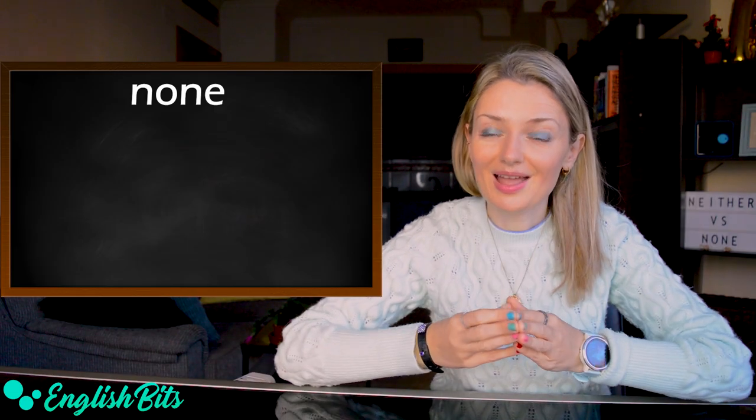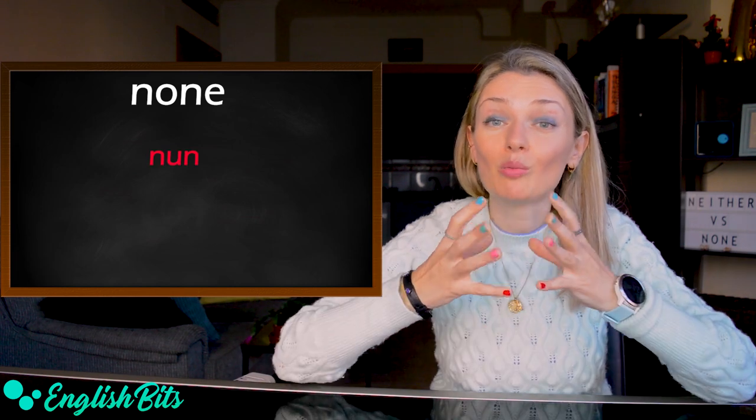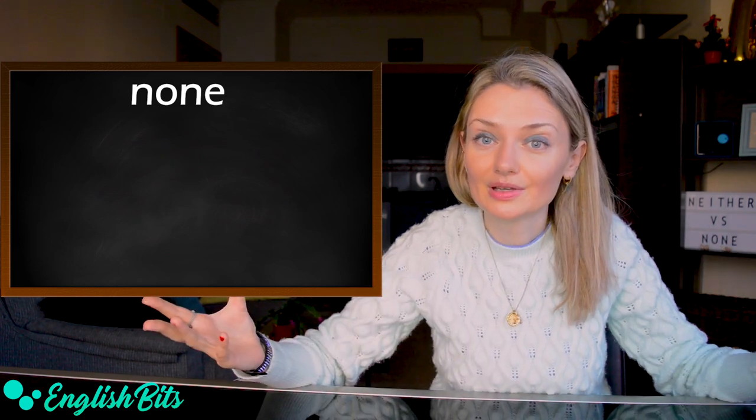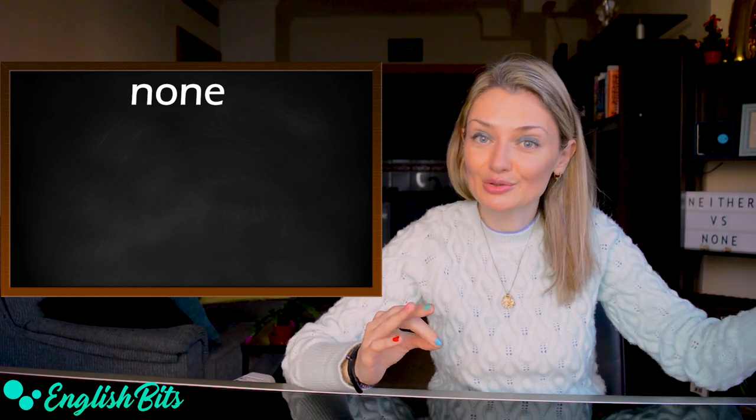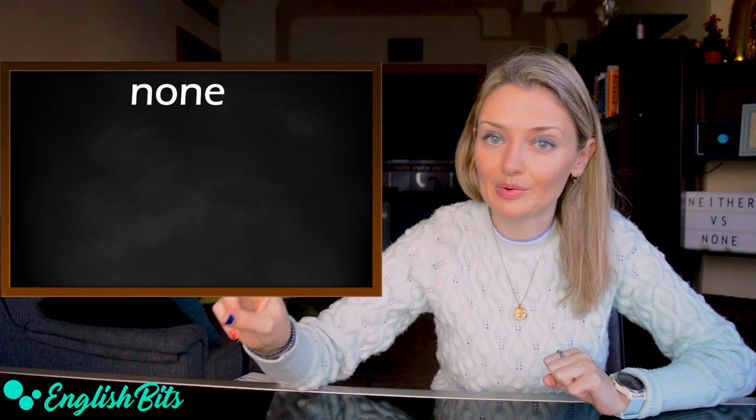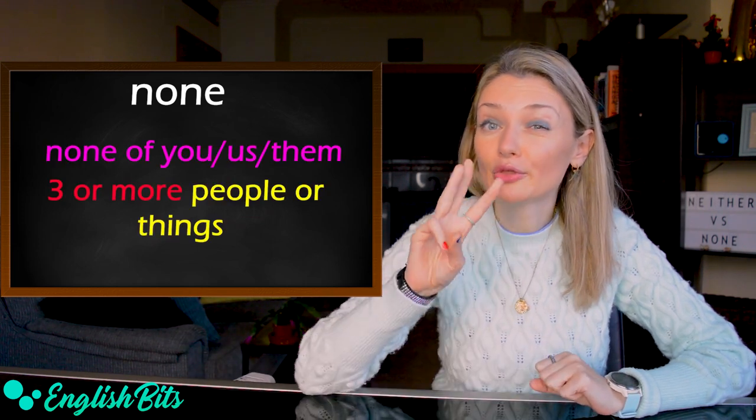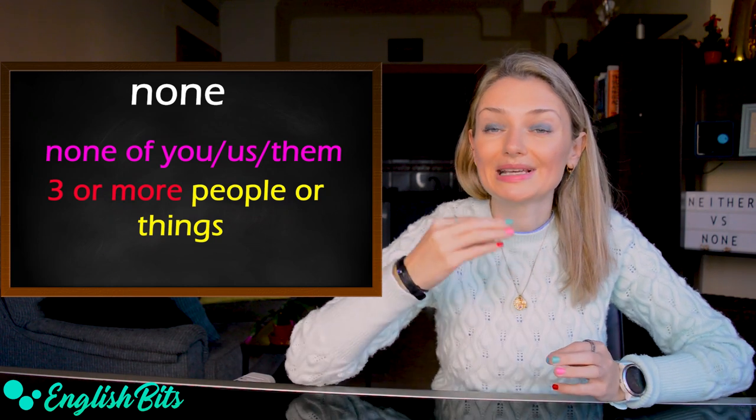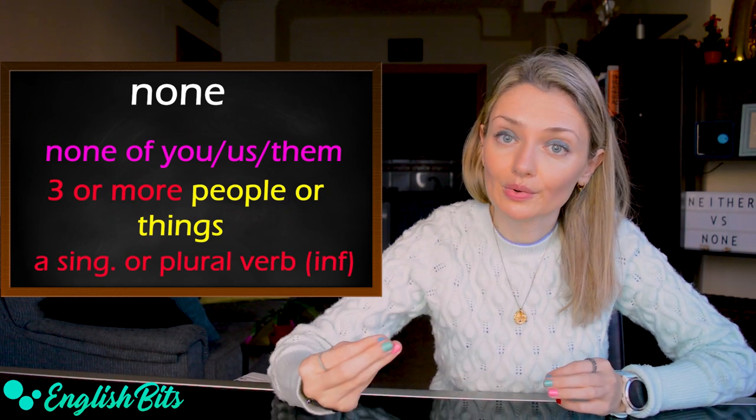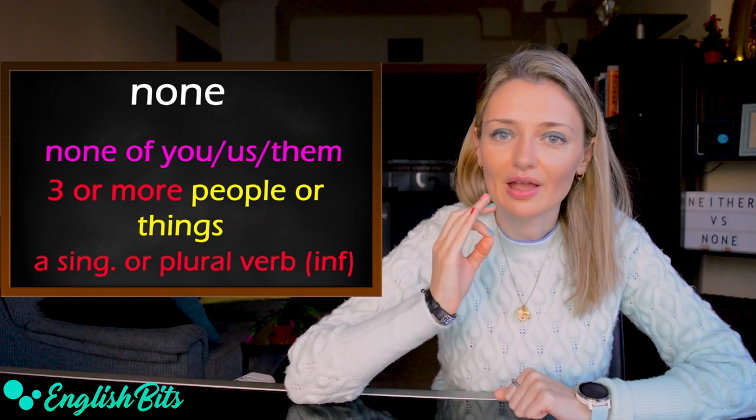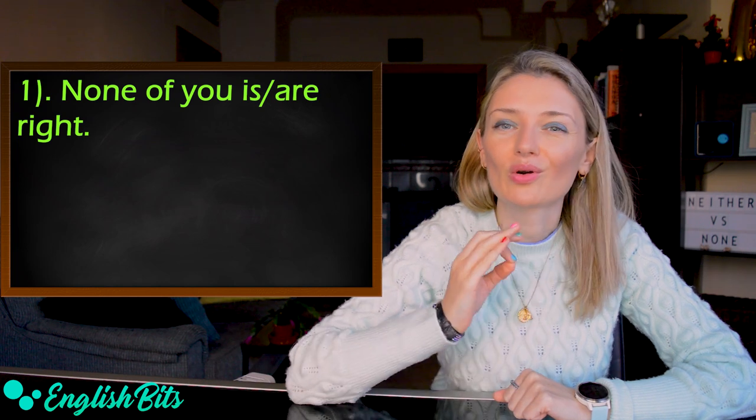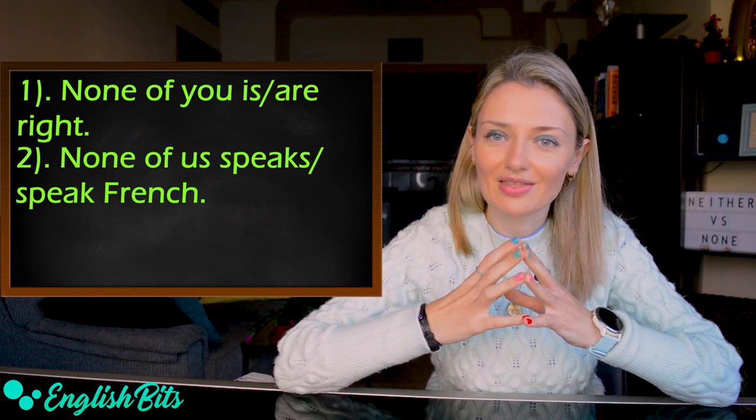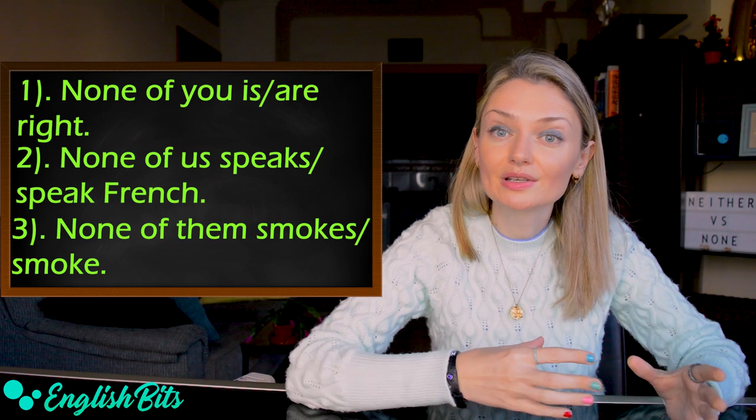And now let's move on to none. It's pronounced exactly the same as none. So, what's the difference between none and neither? So, as you remember, neither is used to talk about two things or people, while none refers to three or more people or things. After none, we can use a singular verb or a plural verb, which is more common in spoken English. Let's look at three examples: none of you is or are right. The second example: none of us speak or speaks French. And the last example here: none of them smokes or smoke.